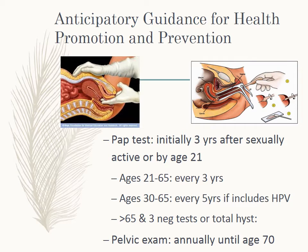Patient teaching to prevent false negative or false positive results with pap tests: we want to ask them to avoid douching, sex, or using vaginal medications or hygiene products for two days before going in for a pap test. It's not recommended during a menstrual period. With the pelvic exam, they're looking at the vagina, the cervix, the uterus, the fallopian tubes, the ovaries, and the rectum. A vaginal self-exam can be done by a woman with a mirror and a flashlight to look for any abnormalities, because vulvar cancer is a very real possibility.